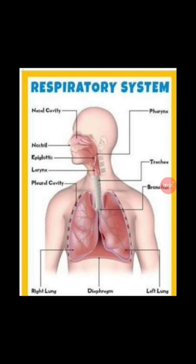The air enters the human body through the nostrils, which pass through the nasal passages. The air is filtered by a specialized hair-like structure called cilia. The cells of the nasal cavity secrete mucus, which helps to trap dust particles and moisture in the air and provides warmth.